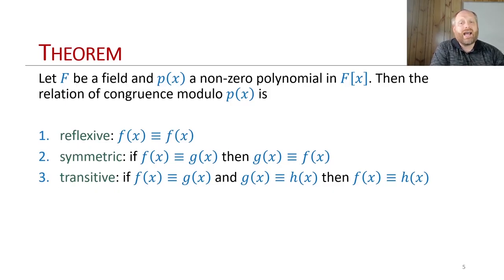So reflexive means that f is congruent to f. Again, this is all done mod p. For symmetric, if f is congruent to g, then g is congruent to f. And transitive, if f is congruent to g, g congruent to h, then f is congruent to h as well.